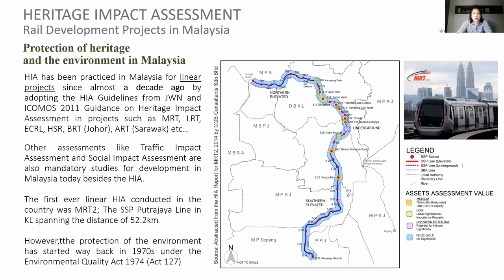Here is a quick overview of HIA and environmental protection in Malaysia. HIA has been in practice in Malaysia for linear projects for almost a decade, adopting the HIA guideline from Jabatan Warisan — the National Heritage Department — and also the ICOMOS 2011 guidance. Heritage impact assessments carried out in Malaysia include MRT, LRT, the ECRL, High Speed Rail, BRT in Johor, ART in Sarawak, and many more. Other assessments like traffic impact assessment and social impact assessment are also mandatory studies for any development in Malaysia.